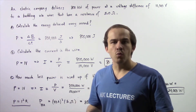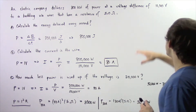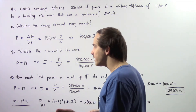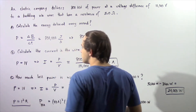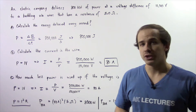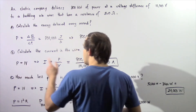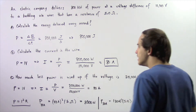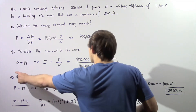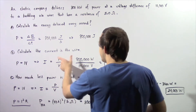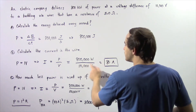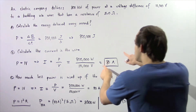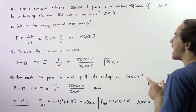Calculate the electric current in our wire when our voltage is 10,000 volts. We know the general equation for power is P equals I times V — power equals the product of electric current and voltage. We know the power and the voltage, so we can rearrange and solve for current. The electric current equals power divided by voltage, or 800,000 watts divided by 10,000 volts, which gives us 80 amps.